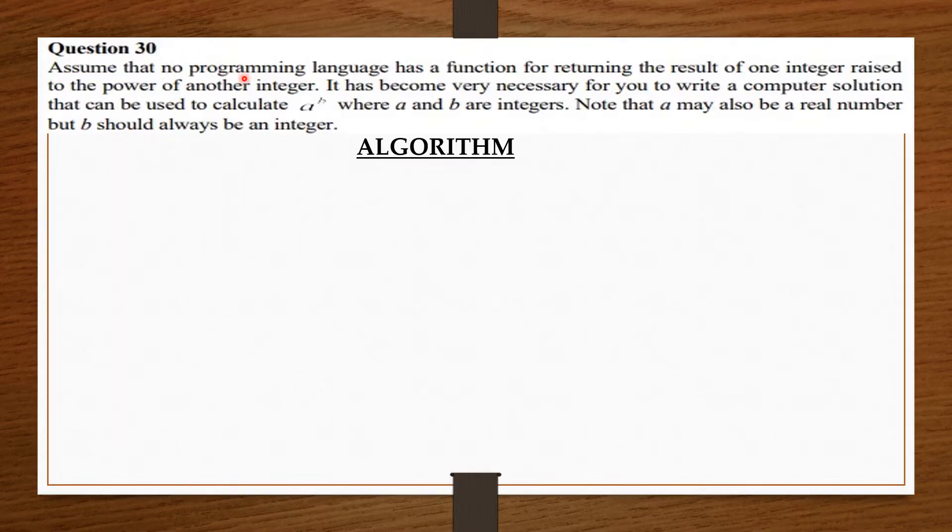Assume that no programming language has a function for returning the result of one integer raised to the power of another integer. It has become very necessary for you to write a computer solution that can be used to calculate a to the power b where a and b are integers. Note that a may also be a real number, but b should always be an integer.